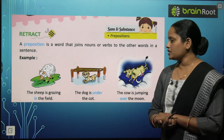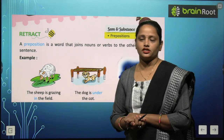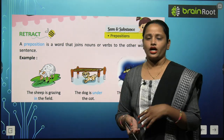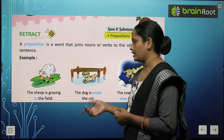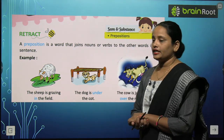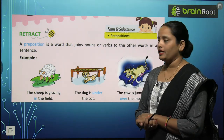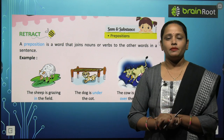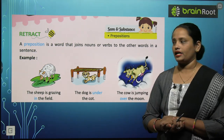Examples are here. You can see the first picture — yahan pe ek sheep hai jo ghas kha rahi hai. The sheep is grazing in the field. Field mein jo sheep hai woh ghas kha rahi hai.